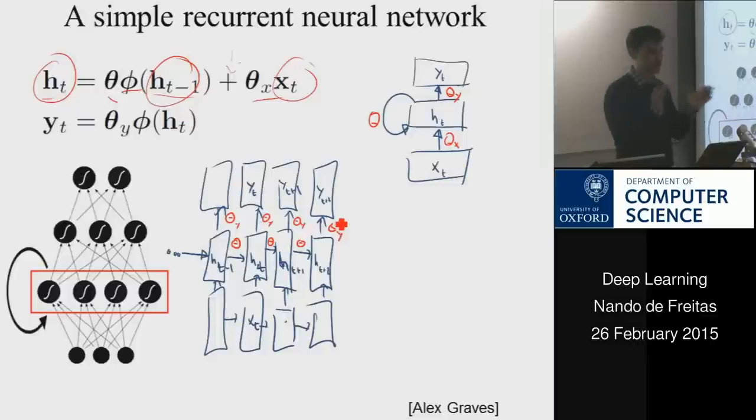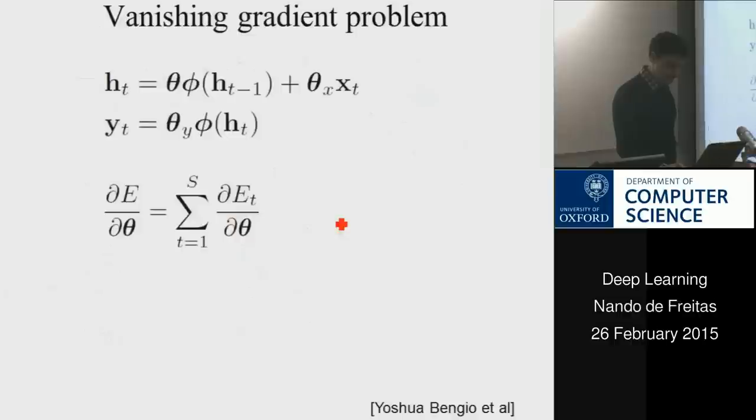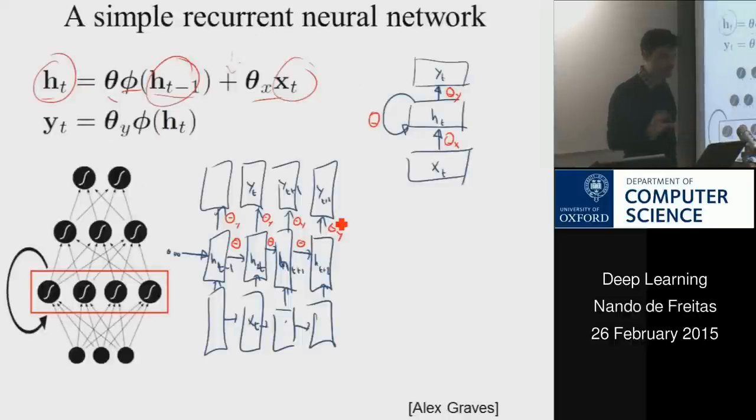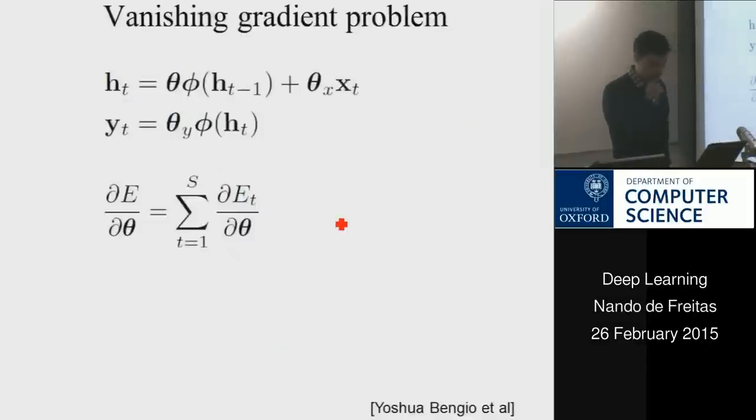And so when I expand, these are the parameters theta. So it's always the same parameter. I'm just copying the parameter. So the parameters are tied. And that's kind of nice from a storage perspective. You're not creating many more parameters. And there's different ways in which you can trade this, how you do the passes through the data and so on. And that's something we can attack during the practical as well.